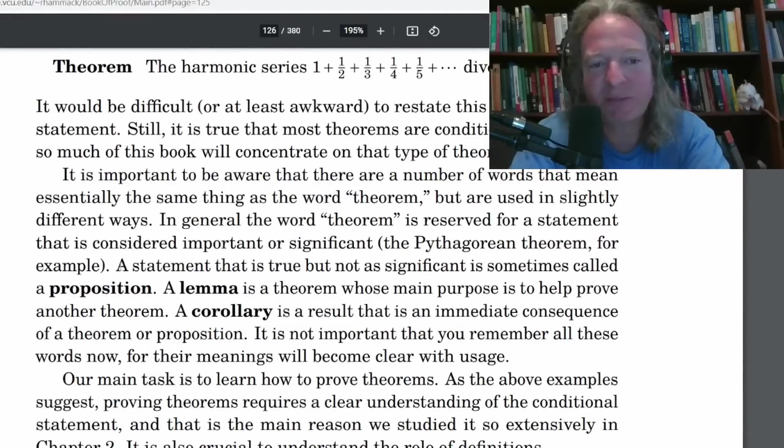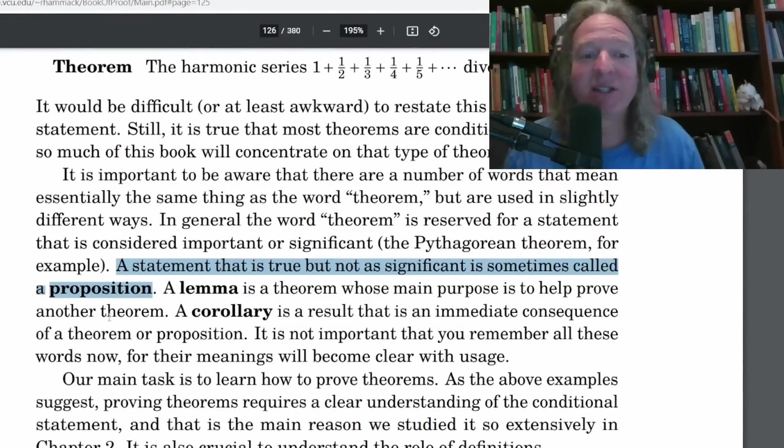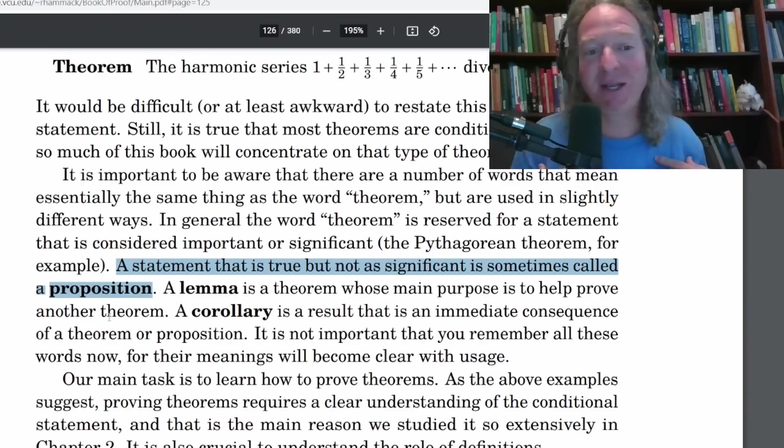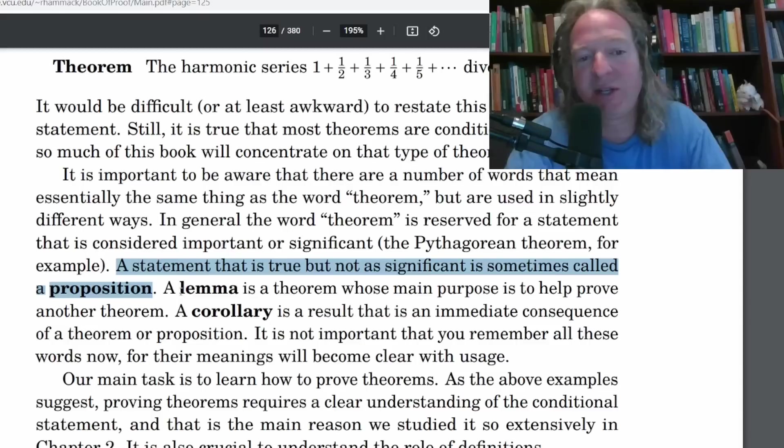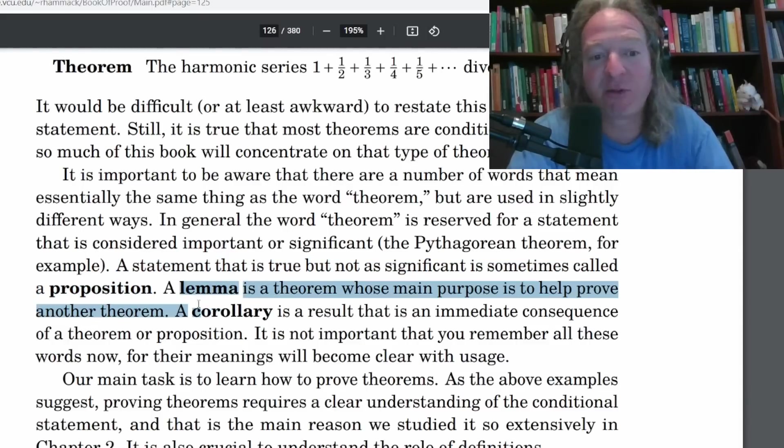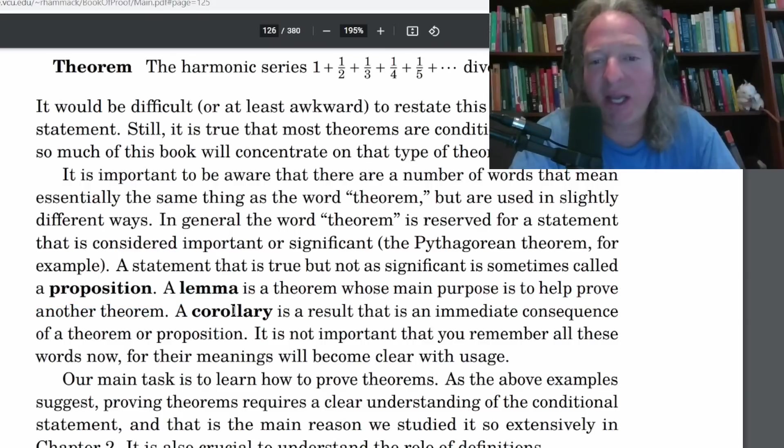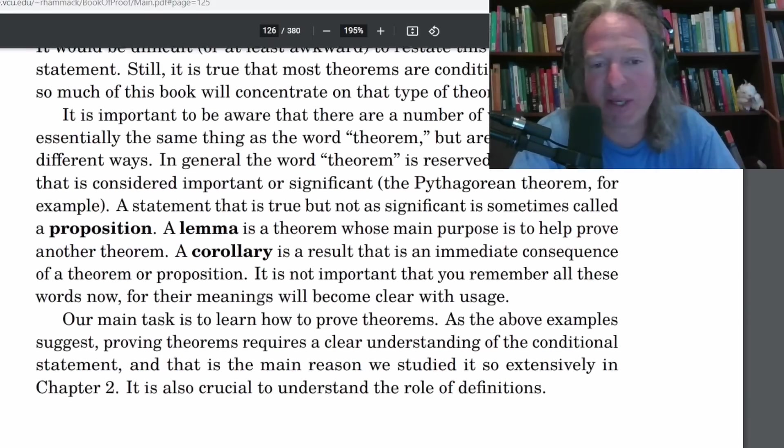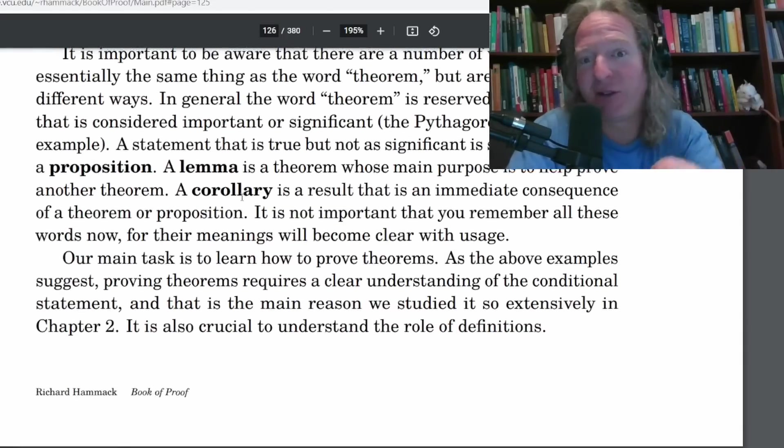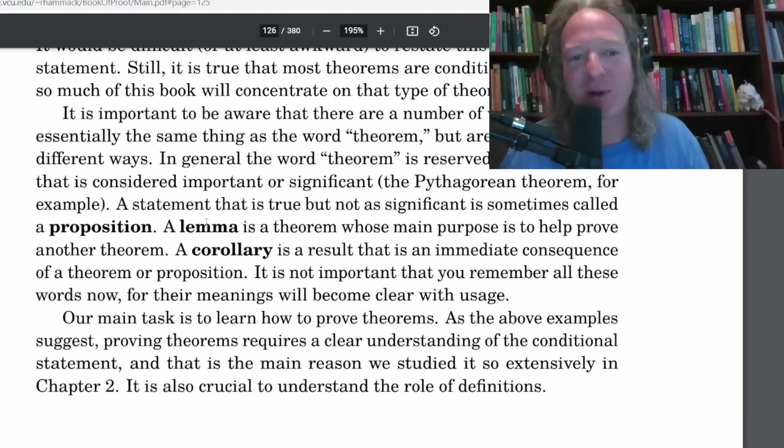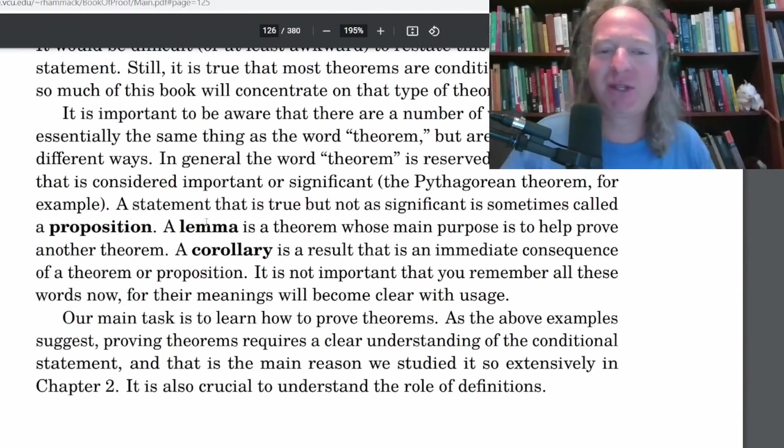Definition is an exact unambiguous explanation of the meaning of a mathematical word or phrase. Here he gives some examples. He talks about propositions. A statement that is true but not as significant is sometimes called a proposition. A lot of books tend to overuse the word theorem in my opinion. I think theorem should be reserved for big things. Proposition is something smaller.